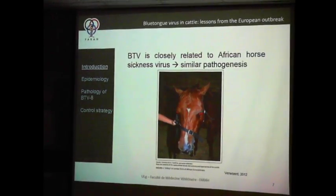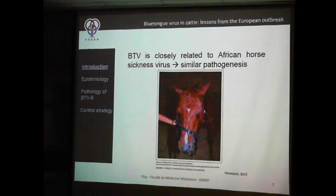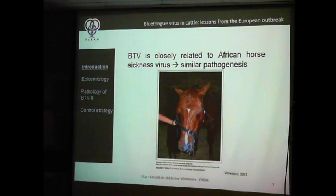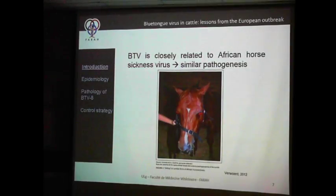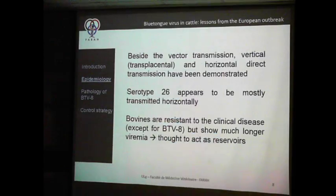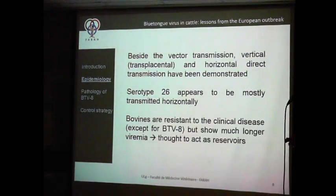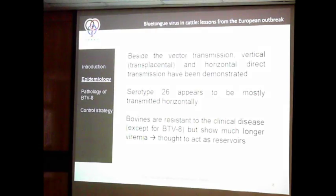BTV is closely related to African Horse Sickness, which causes many lesions including edema and conjunctivitis. We will see that there is a similar pathogenesis between all these Orbivirus family members. Regarding epidemiology, it is important to know that beside vector transmission, there is also vertical transplacental transmission, similar to Schmallenberg.